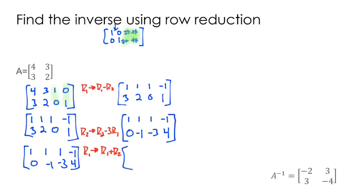Let's do that. I'm going to take row 1 and replace it with row 1 plus row 2. So 1 plus 0 is 1, 1 plus negative 1 is 0, 1 plus negative 3 is negative 2, and negative 1 plus 4 is 3.